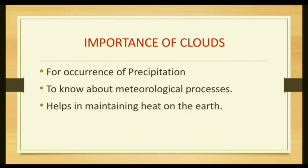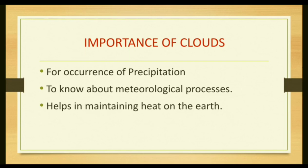Clouds diffuse and scatter solar radiation. Clouds also absorb part of terrestrial radiation — the heat radiated by the Earth — and radiate it back to the surface. Clouds radiate heat continuously in proportion to their temperature. Clouds also form shade, and because of clouds the temperature of the Earth is lower; if it is a clear sky with no clouds, the temperature on Earth will be higher. In the absence of clouds, days would be much warmer and nights much cooler. Clouds form a layer that stops terrestrial radiation from escaping into space and helps maintain the temperature of the Earth.